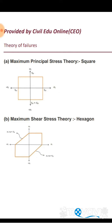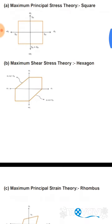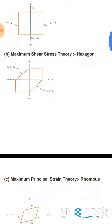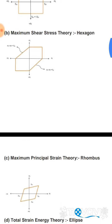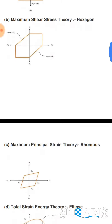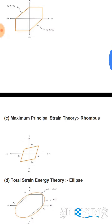First, we are going to see the failure shapes of various theories. A) Maximum Principal Stress Theory — Rankine Theory — has the failure shape as a square. B) Maximum Shear Stress Theory — Tresca Theory — has the failure shape as a hexagon. C) Maximum Principal Strain Theory — St. Venant's Theory — has the failure shape as a rhombus.